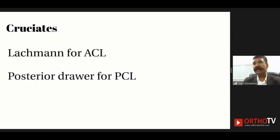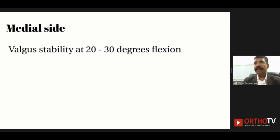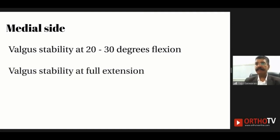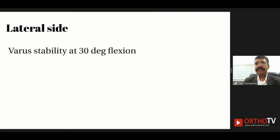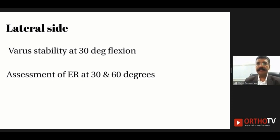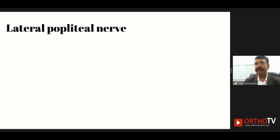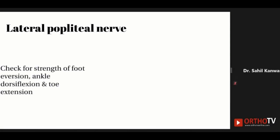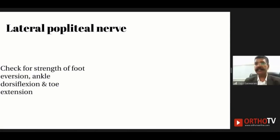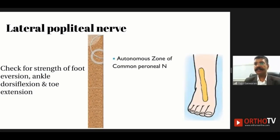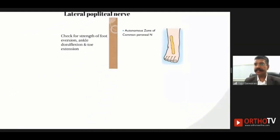I perform a Lachman test for the ACL and a posterior drawer for the PCL. On the medial side, I assess valgus stability at 20 to 30 degrees and at full extension. On the lateral side, I assess varus stability at 30 degrees and external rotation at 30 and 60 degrees for the popliteus. It is important to assess the lateral popliteal nerve by checking foot eversion strength, ankle dorsiflexion, toe extension, and sensation in the autonomous zone of the common peroneal nerve.